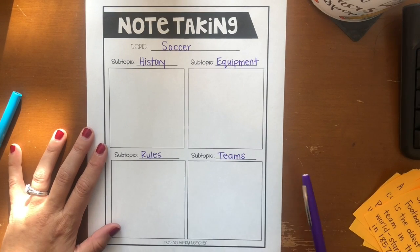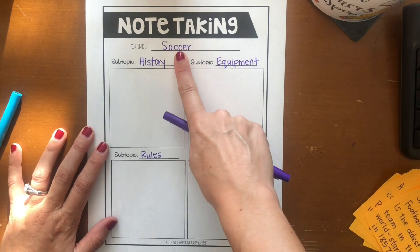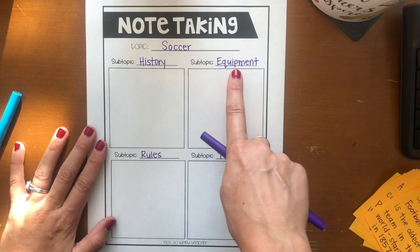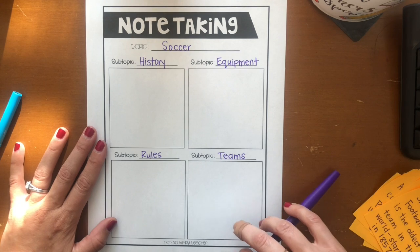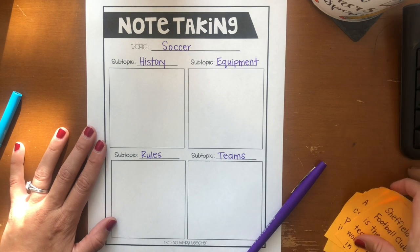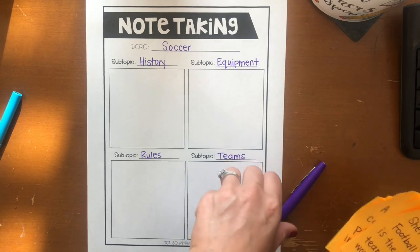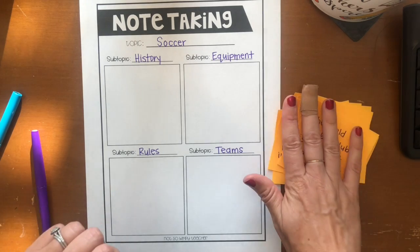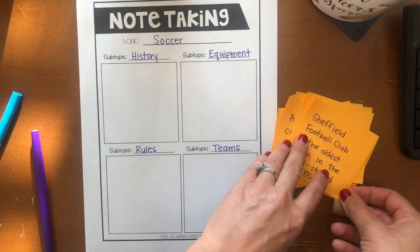Okay, this is the note-taking organizer that I'm going to use. I've already filled it out with an example topic of soccer that we talked about, with subtopics: history, equipment, rules, and teams. I took some time already and jotted down some notes — I read about soccer and wrote down some facts in my own words. I paraphrased some things, and I'm just going to show you how you can organize your notes as you take them.